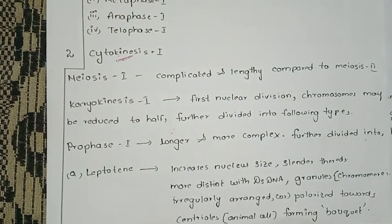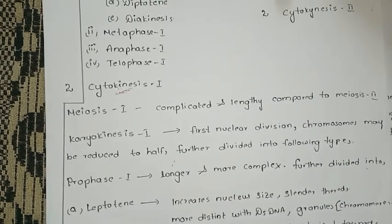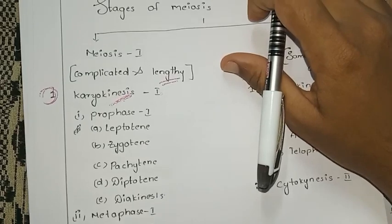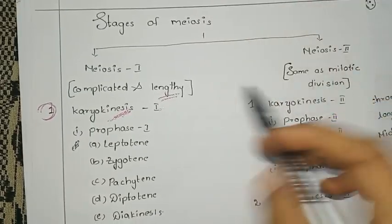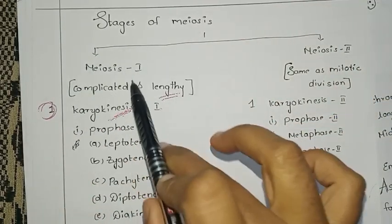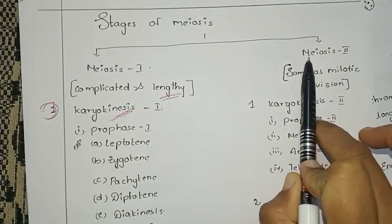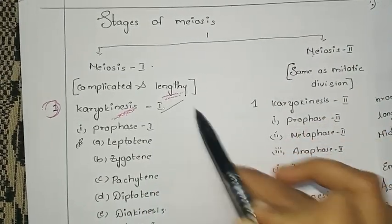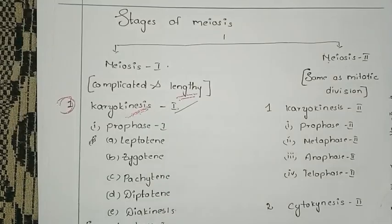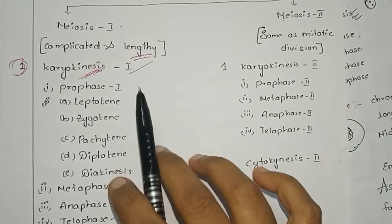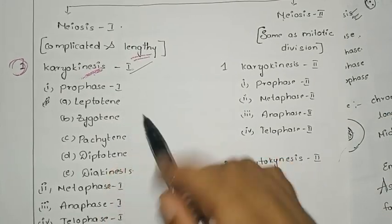The stages of meiosis — the main stages are two: Meiosis 1 and Meiosis 2. Meiosis 1 and Meiosis 2 are each divided into Karyokinesis and Cytokinesis. Karyokinesis 1 and Cytokinesis 1 belong to Meiosis 1; Karyokinesis 2 and Cytokinesis 2 belong to Meiosis 2. Karyokinesis means nuclear division.